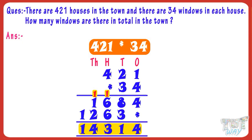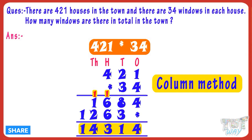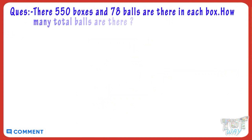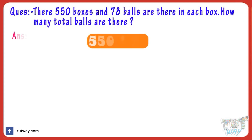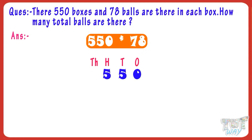This is called the column method of multiplication. Let's see another example. There are 550 boxes and 78 balls in each box. How many balls are there in total? We will calculate 550 multiplied by 78. First of all, align the numbers.